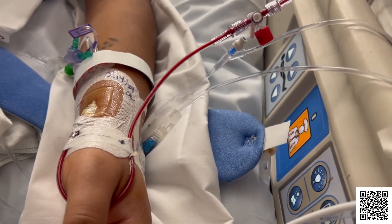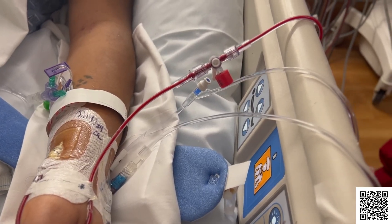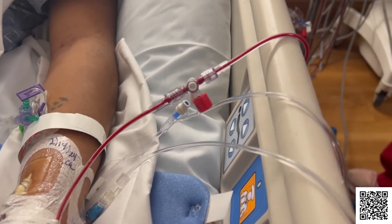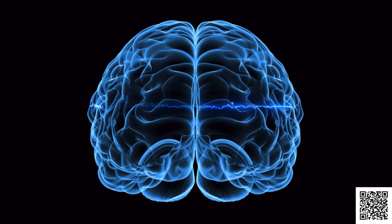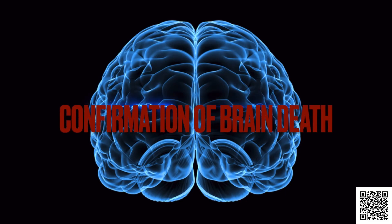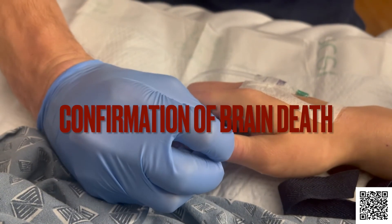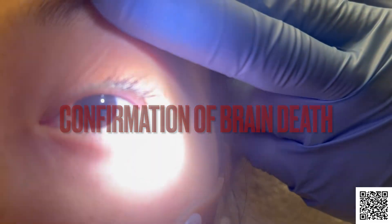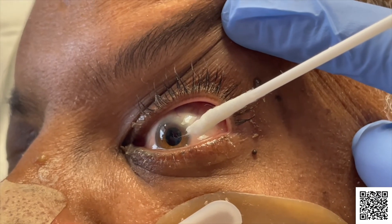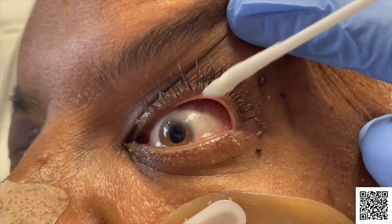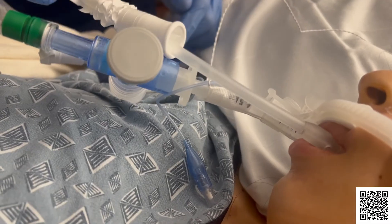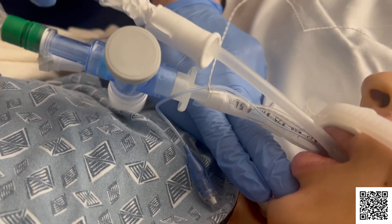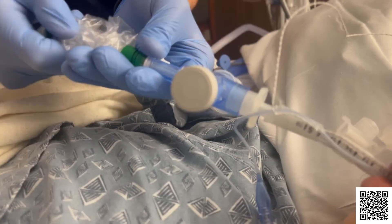If no spontaneous respiratory effort is observed, an arterial blood gas will be obtained at eight to ten minutes. The arterial blood gas is compared with the initial one, and if there's a significant rise in carbon dioxide, then apnea has been established. Finally, in some states or countries, two doctors are required to do the brain death examination. Once confirmed, the patient can be pronounced dead by brain death criteria, and the physician will inform the patient's family or next of kin.